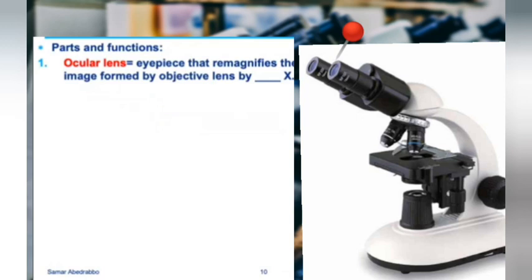The ocular lens has an inherent magnification of 10x. So if you have a slide — let's say you're looking at an E. coli sample from a UTI — and you put your eyes on the ocular lens, you will naturally see that bacteria at 10 times magnification. The ocular lens has a default magnification of 10x.